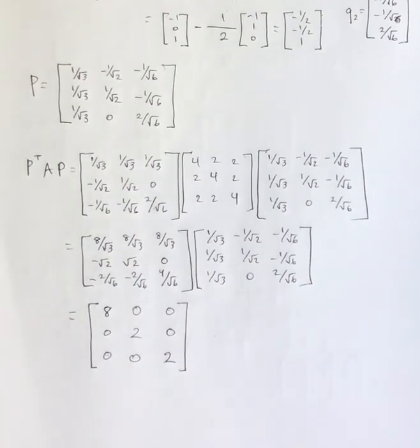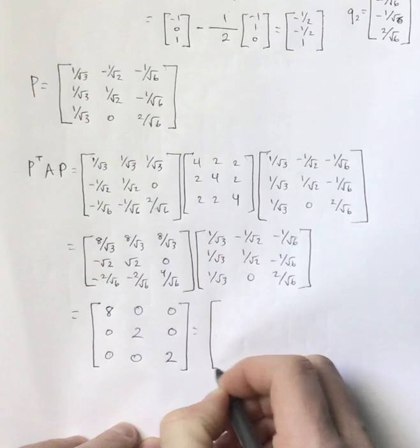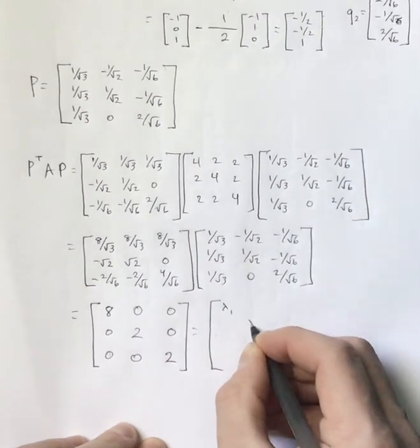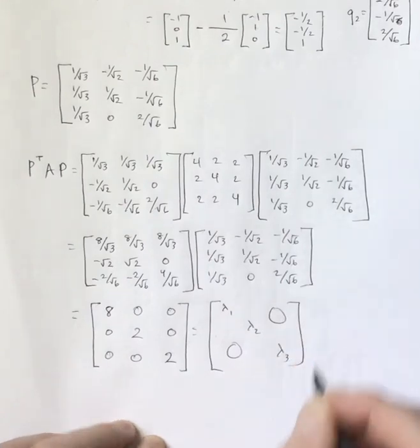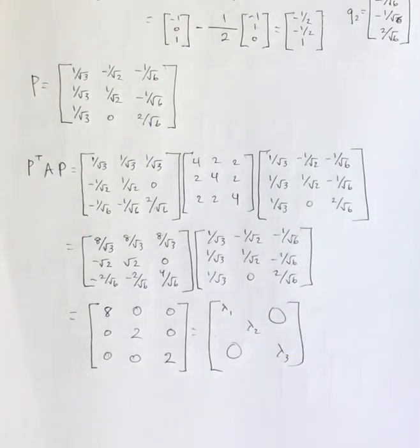And so notice that is, in fact, what we expected because I've got lambda 1, lambda 2, lambda 3 along the main diagonal and 0s everywhere else. And that's how you would find the matrix or a matrix P that is orthogonal and also diagonalizes a given matrix A. So I hope that makes sense. And if you have any questions, please let me know.